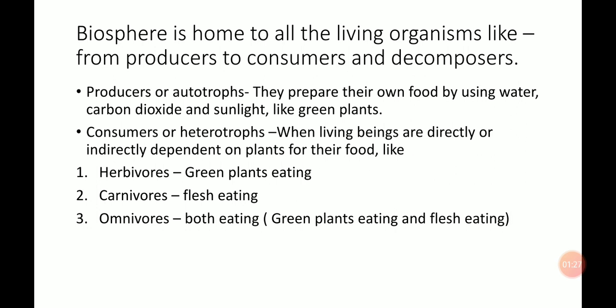An example of producers or autotrophs is green plants, which prepare their food by their own. Now moving to the next, that is the consumers. Consumers are those who consume food which is prepared by others — meaning producers. So they are also known as heterotrophs. Why are they known as heterotrophs? Because they depend upon others; they cannot prepare their food by their own.